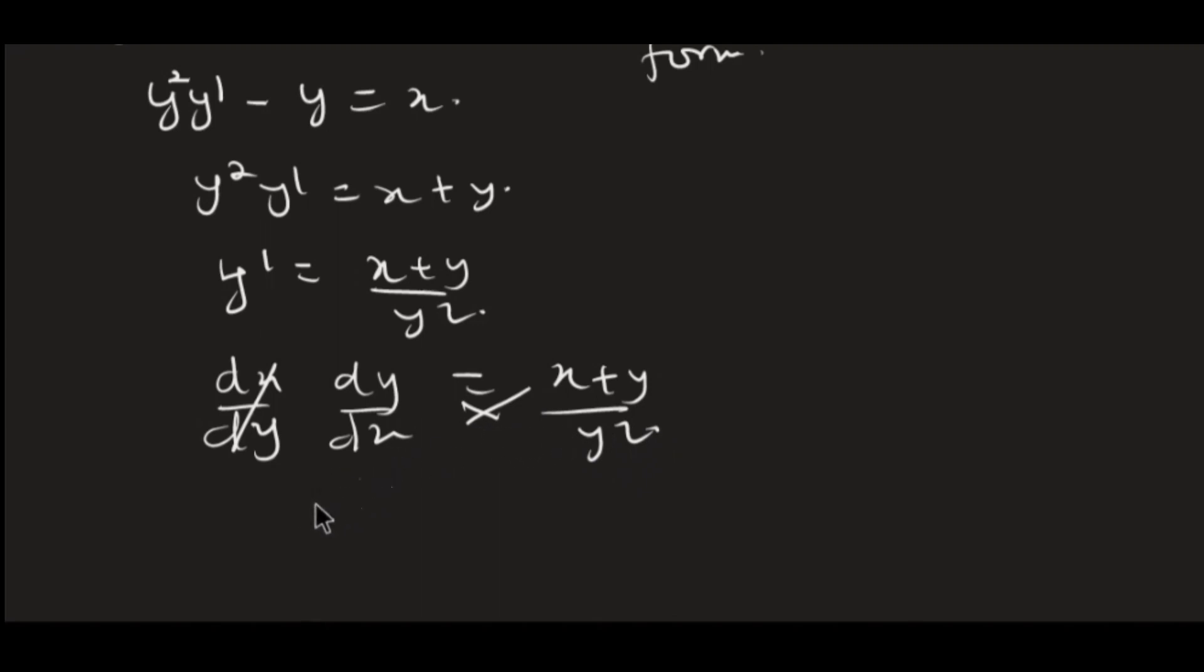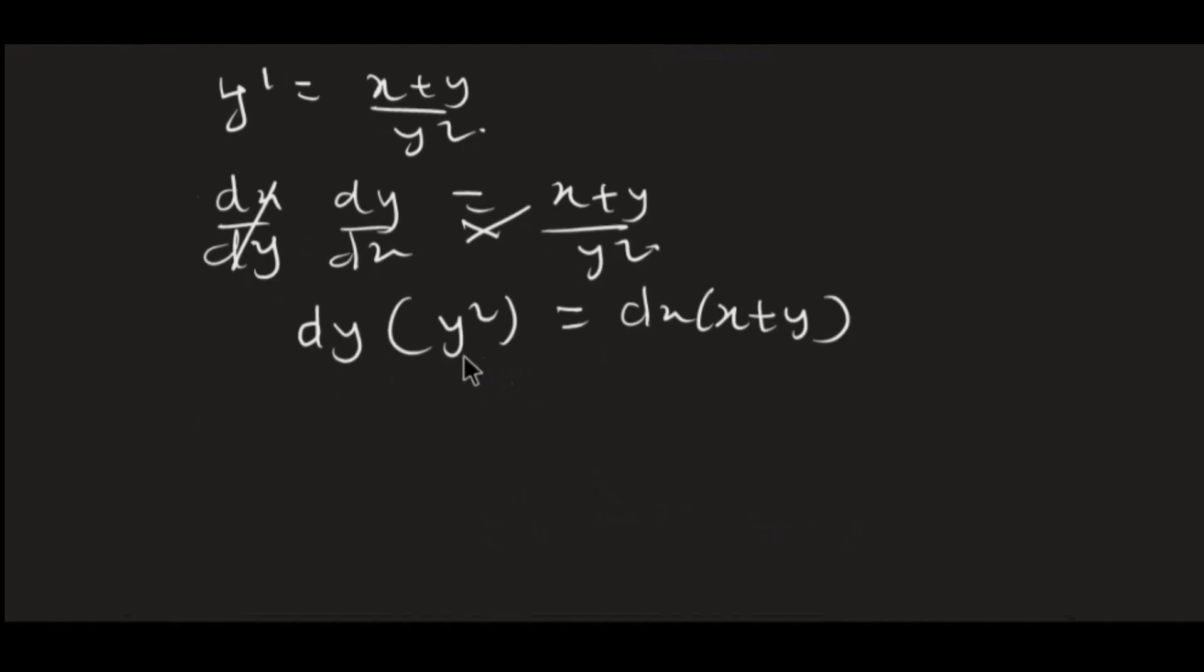The differential form is saying that we have to move this back there, so that we get (x + y)dx minus y²dy is equal to 0. And this gives us our differential form.